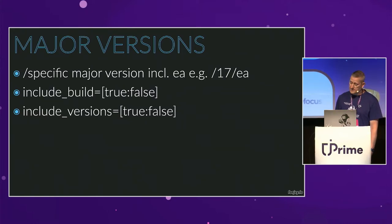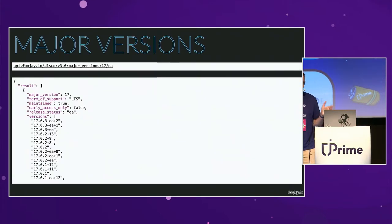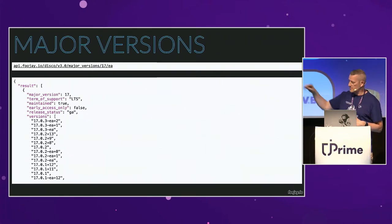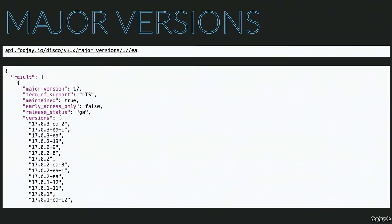JDK 19 is currently EA — early access — but at some point it will become GA. When it does, the EA designation disappears from the version number. You can call major_version/17/EA to see all versions including EA builds before 17 became generally available. GA means general availability.